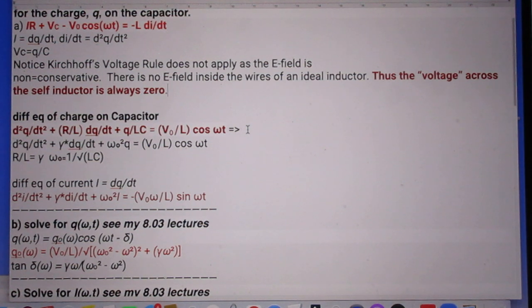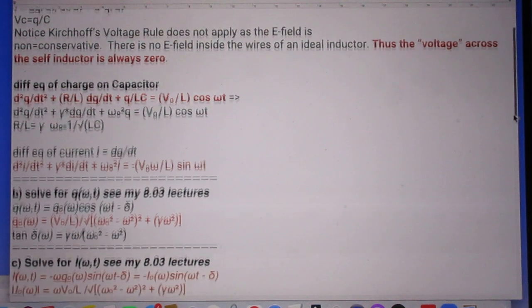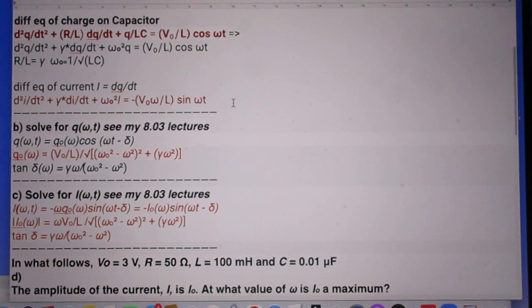And you can rewrite that if you prefer. You can rewrite that in terms of gamma which we often do which is R over L. And we often introduce an omega zero squared which is the resonant frequency squared which is 1 over the square root of LC. So you can rewrite that if you want to in this form.